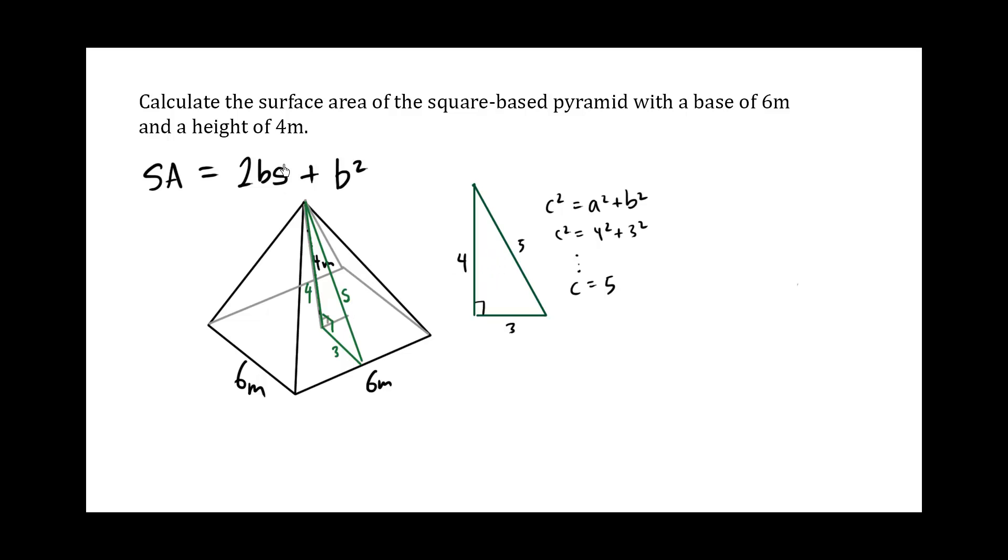So we know what S is. This here is known and it's 5. Now we know what the base is. The base is 6. So this is going to be equals to 2 times the base, which is the entire base is 6, and the slant happens to be 5 plus, and then this is also the base, which is 6 squared.